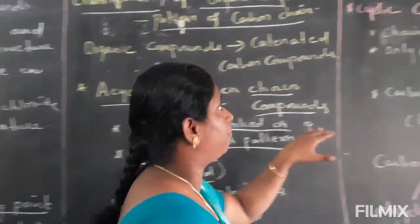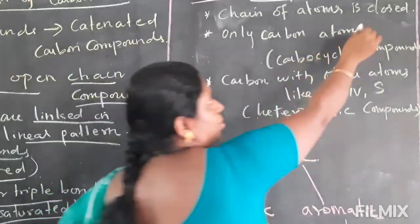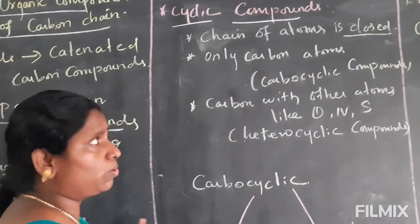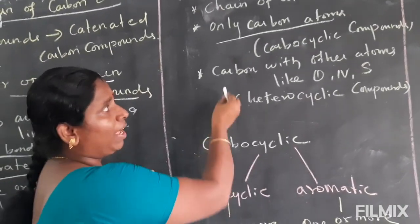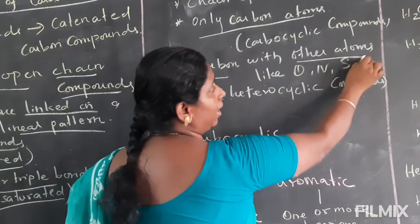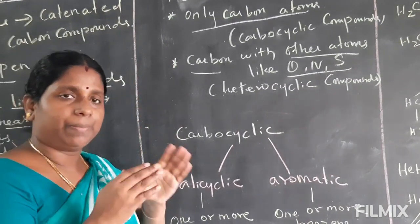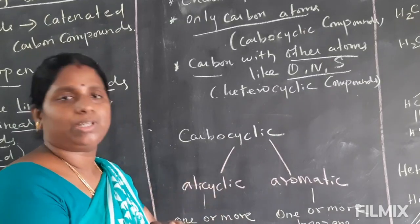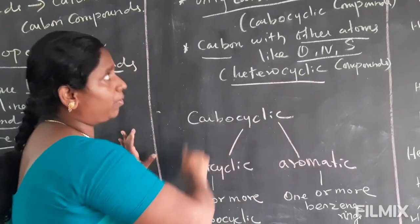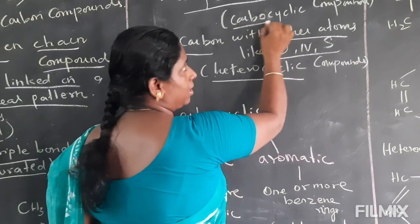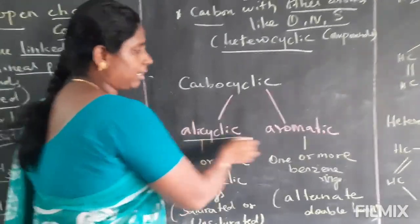Next type of classification is cyclic compound. In a cyclic compound, the carbon chain is closed type. There can be only carbon atoms — that is carbocyclic — or carbon combined with other atoms like oxygen, nitrogen, and sulfur — that is called heterocyclic. When only carbon atoms are present in the ring, it is carbocyclic.